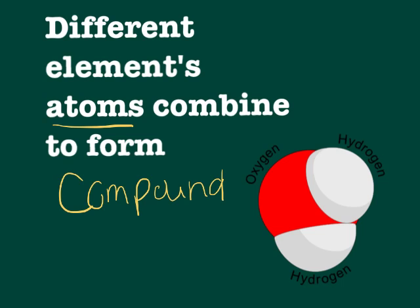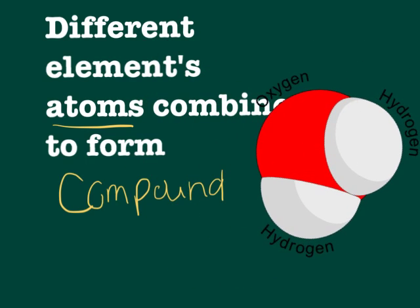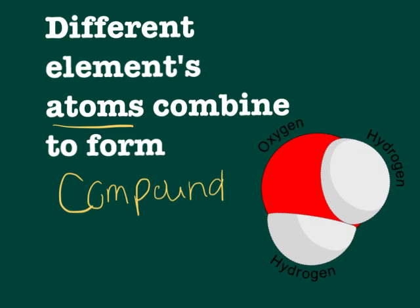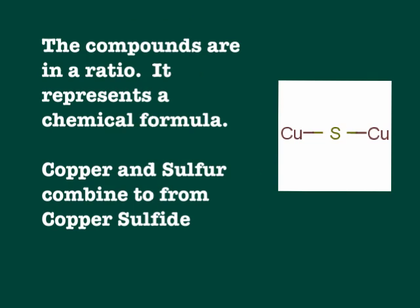If you're looking at this part right here, this is what we had before as a molecule. The tiniest little bit of this part right here is also a compound and also a molecule. The only reason this one's a compound is because the atoms are different. Compounds are always in a ratio — it represents the chemical formula. So if you take a look here, you have copper and sulfur combined to form this material called copper sulfate. They have to be in this ratio for this to happen.